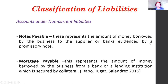We also have non-current liabilities. Notes payable represents the amount of money borrowed by the business from a supplier or bank, evidenced by a promissory note. Mortgage payable represents the amount of money borrowed by the business from a bank or lending institution which is secured by collateral. These are non-current liabilities because they extend beyond one year.